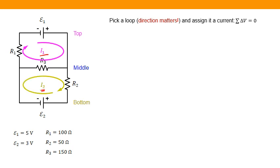That's current I2. And so the current in this bottom loop is I2. The current in this top loop is I1. I've picked clockwise as the direction for both of my loops.